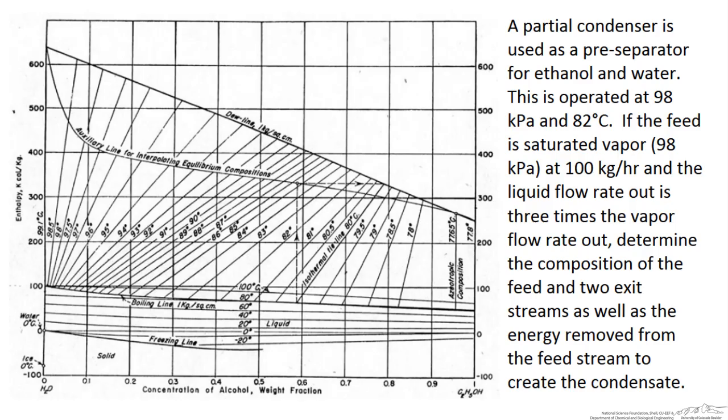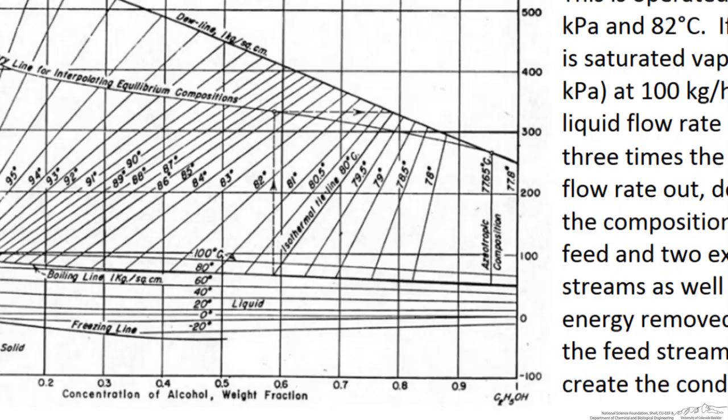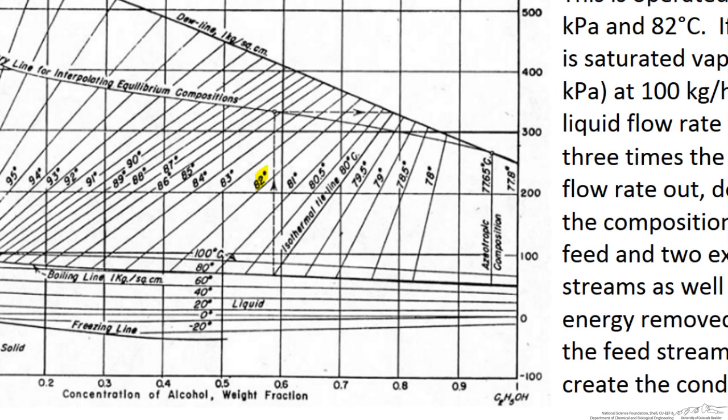So we know that we are at 82 degrees at phase equilibrium. So let us zoom into this area and if we focus on the 82 degrees Celsius line and know that we have both vapor and liquid then we know the composition of those two streams. All we have to do is read it off of the x axis.